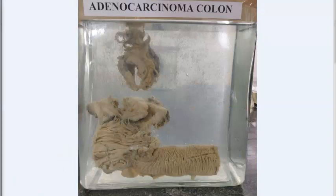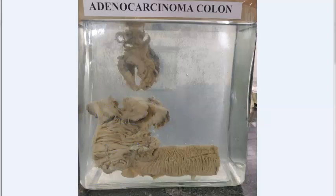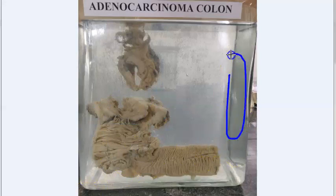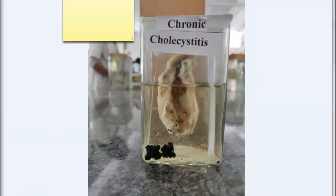Adenocarcinoma of the colon — on the right side it looks like a fungating large cauliflower-like soft friable mass projecting into the lumen. If it were on the left side it would be a napkin ring configuration. In microscopy, you will see infiltrating malignant glands into the muscularis.